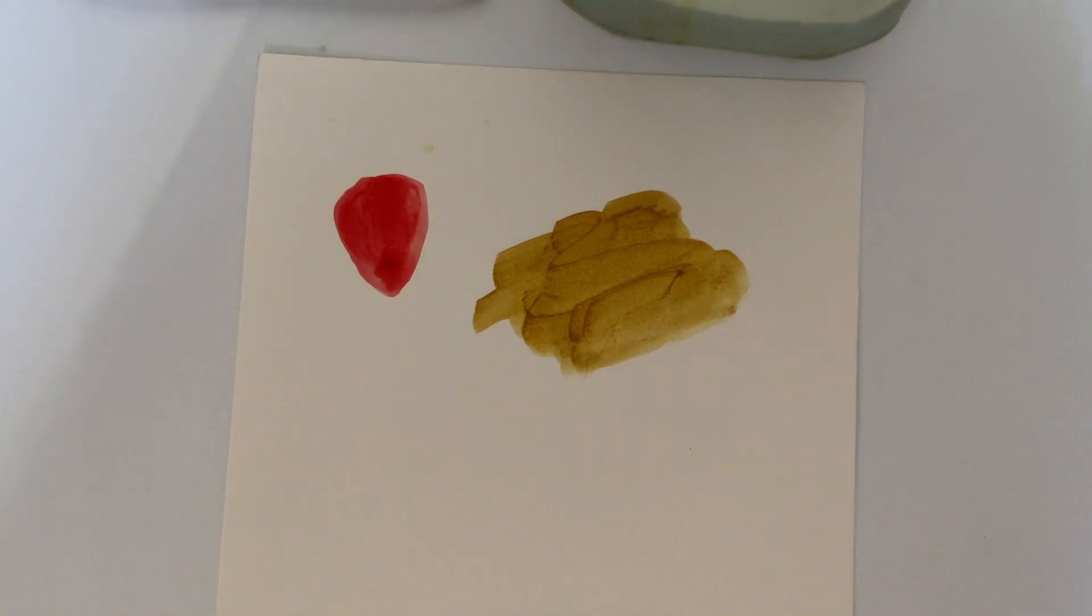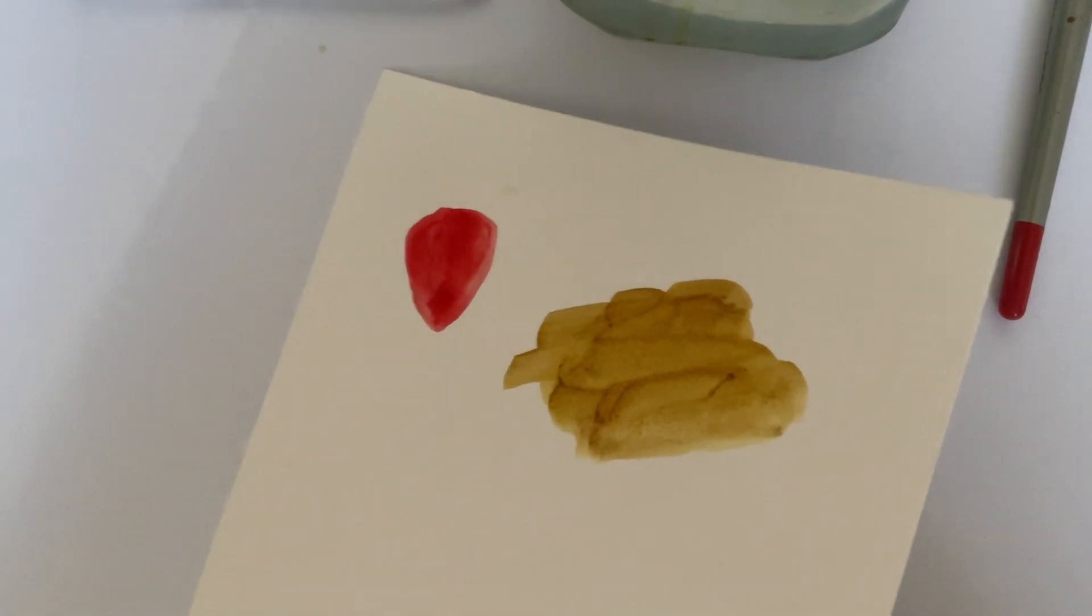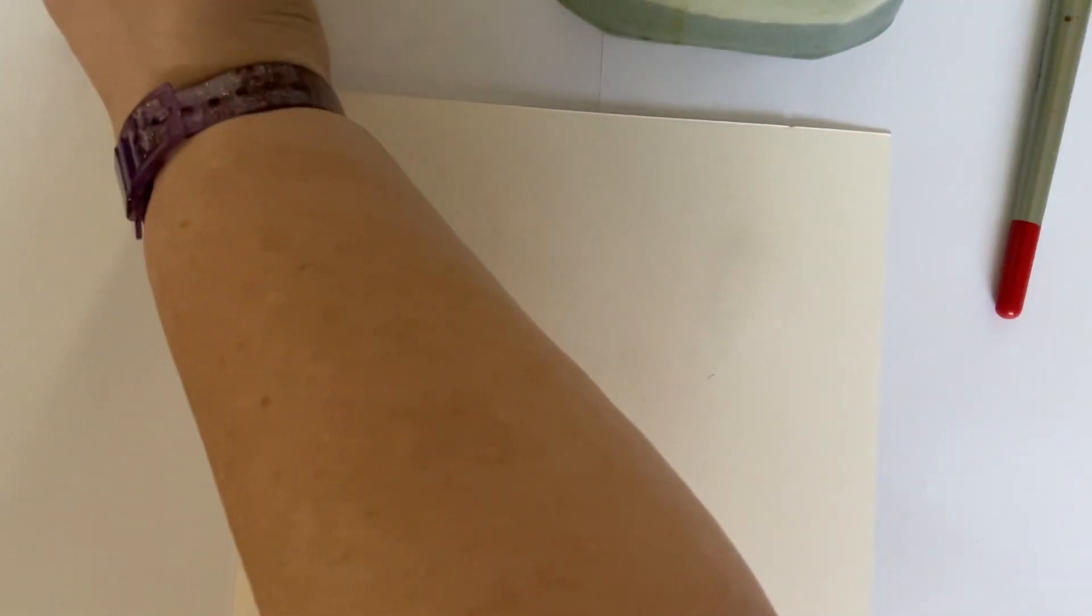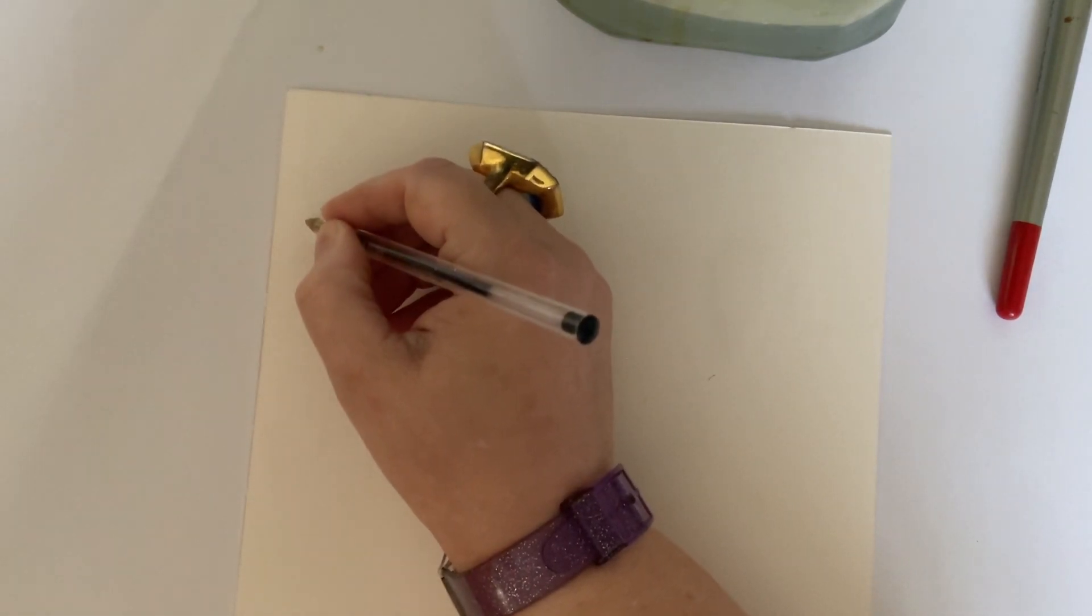So what I would suggest you do is make a color chart. Now don't worry, we're not going through all 72 pencils because we'll be here all day. I'm just going to turn this over. I know it's going to make my paper underneath wet, but that's why I've got some scrap paper down on my table.